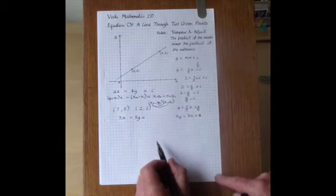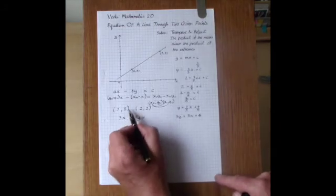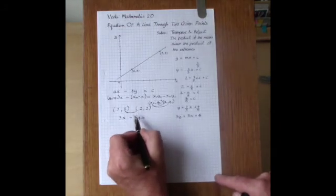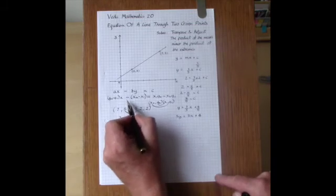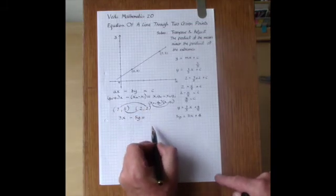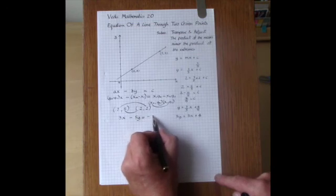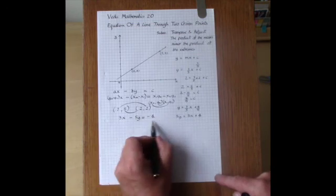And then the product of the means minus the product of the extremes is 5 times 2, which is 10, minus 7 times 2, 14. 10 minus 14 is minus 4. And that's the answer in one line.